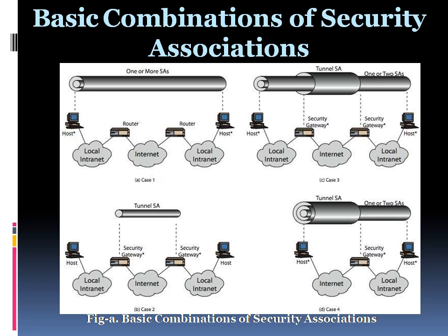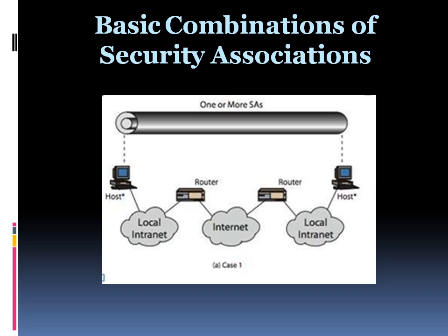In Case 1, all security is provided between end systems that implement IPSec. For any two end systems to communicate via an SA, they must share the appropriate secret keys. Among the possible combinations are: (a) AH in transport mode, (b) ESP in transport mode, (c) ESP followed by AH in transport mode — that is, ESP SA inside and AH SA outside — and (d) any one of a, b, or c inside an AH or ESP in tunnel mode. We have already discussed how these combinations support authentication, encryption, authentication before encryption, and authentication after encryption.